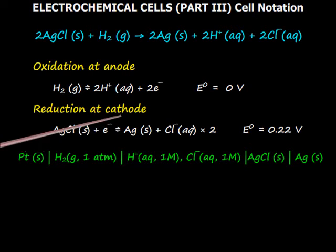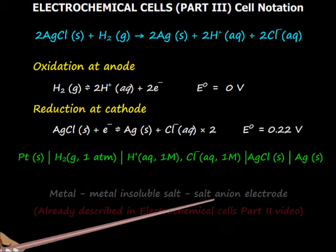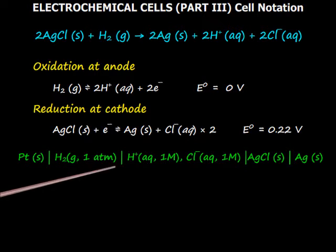In the cathode reaction, there are two solids and one aqueous phase which is the example of a metal, metal insoluble salt, and ion electrode. So the cell notation is written like this.